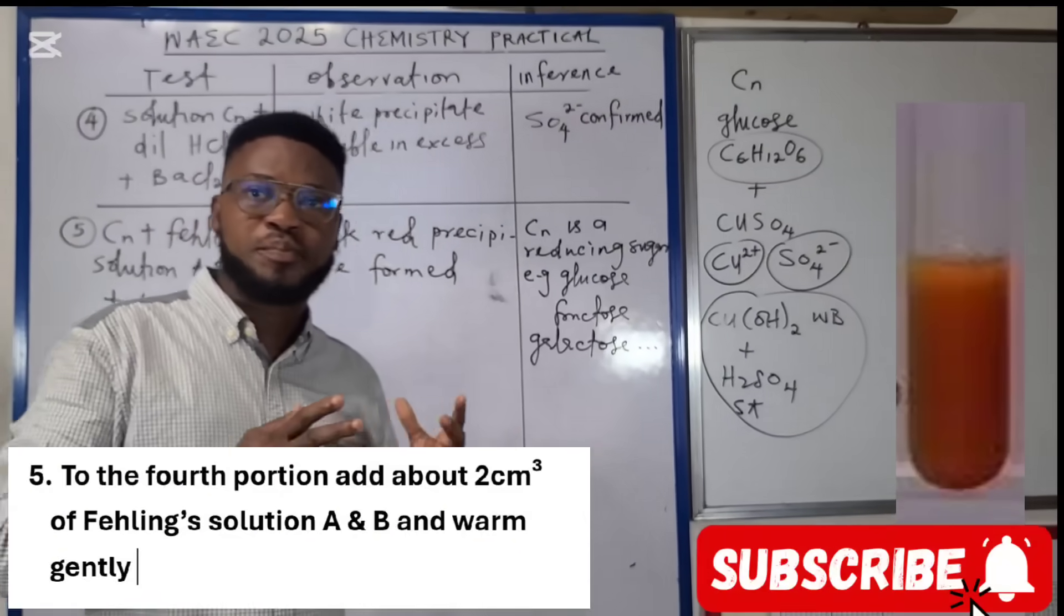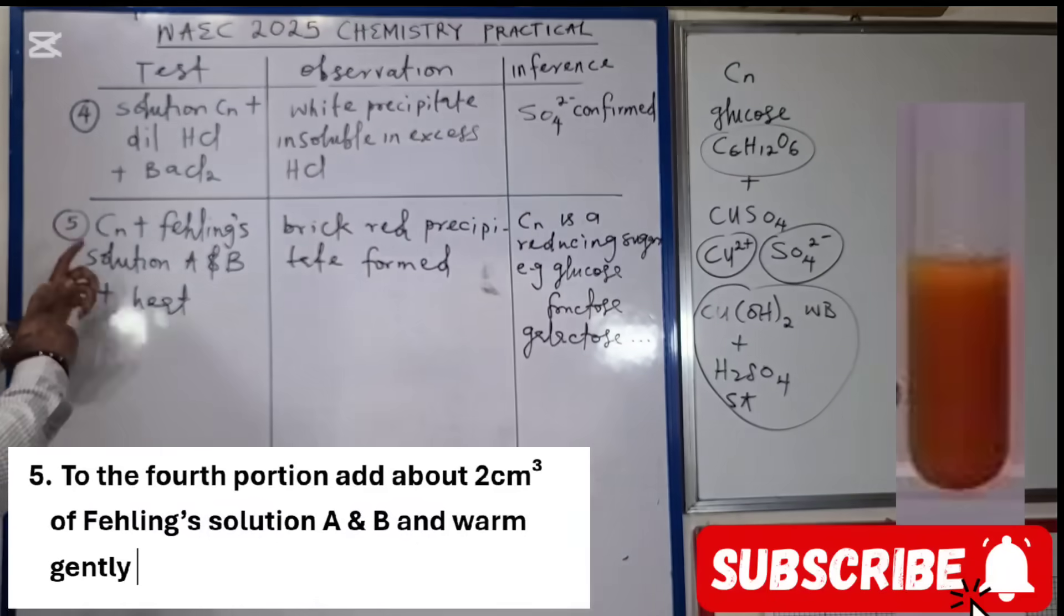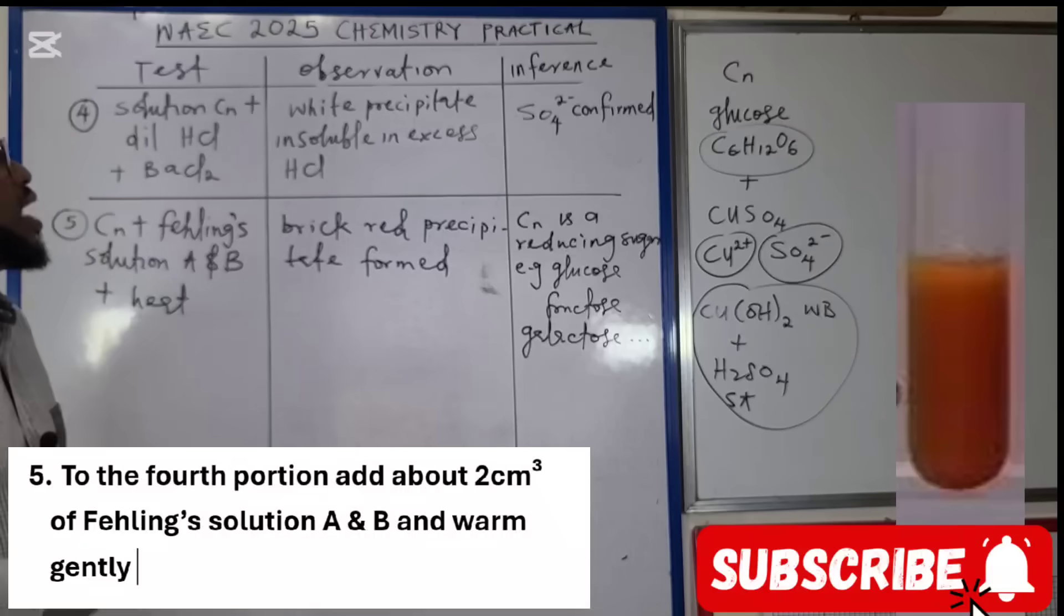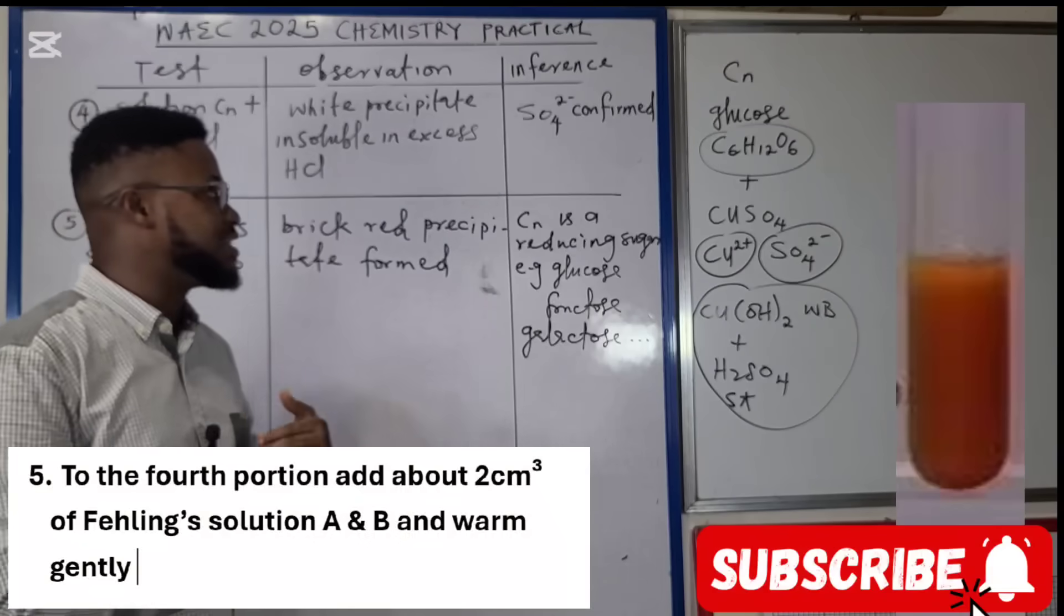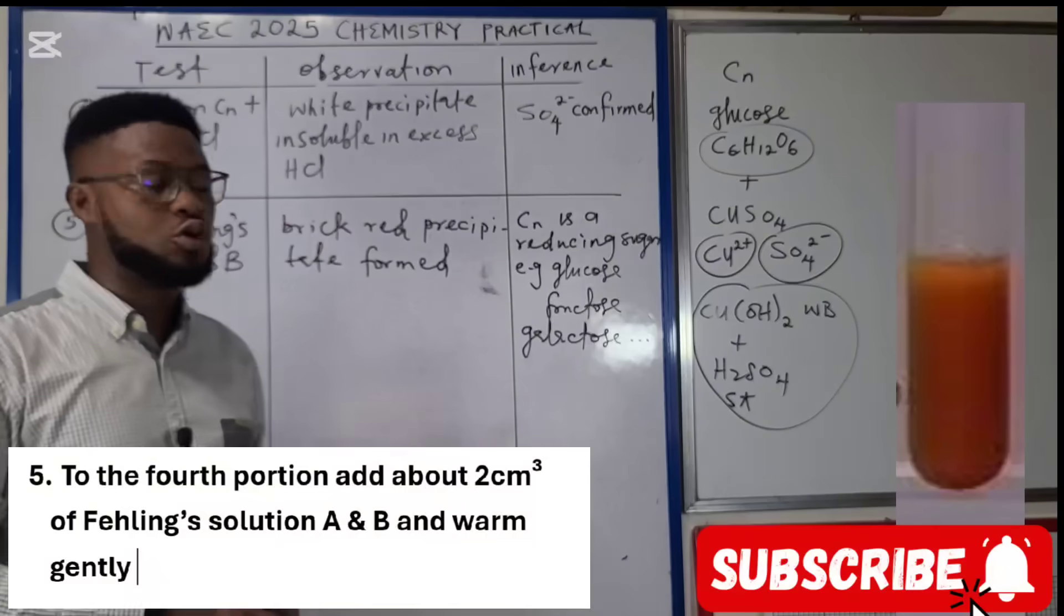CN plus Fehling's solution A and B plus heat, what is going to be the observation? Brick red precipitate forms. In that case, CN is a reducing sugar, is a single molecule sugar which could be glucose, it could be fructose, it could be ribose, it could be galactose.